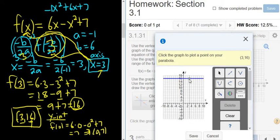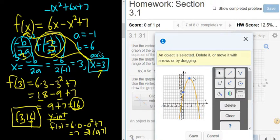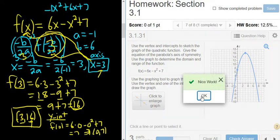Now we want the y-intercept. So 0, 7. It's going to be right there. 0, 7 looks okay. Notice this parabola opens down, because we have a negative in front of the x squared. Click save. Check answer. And nice work.